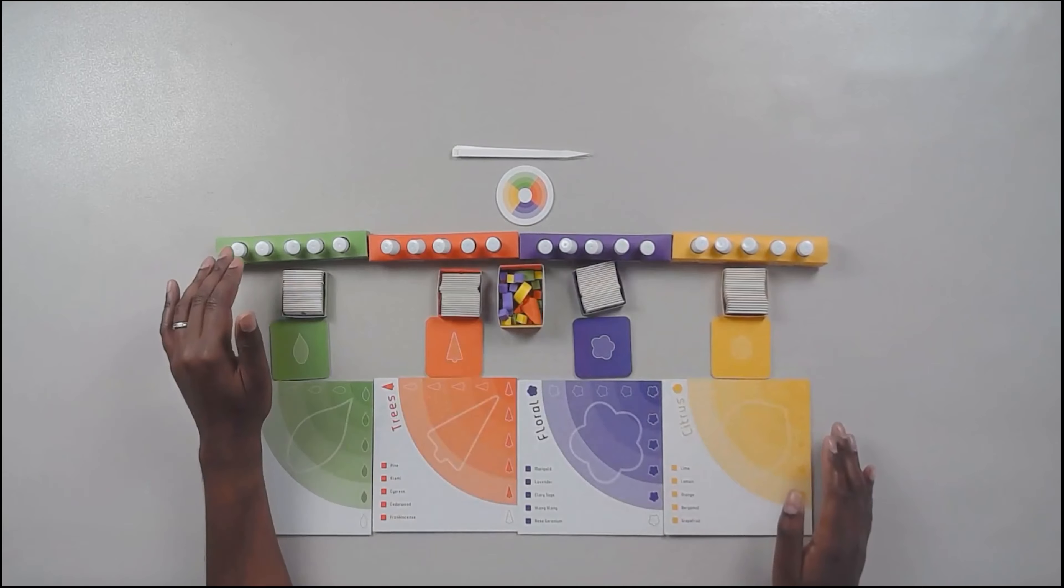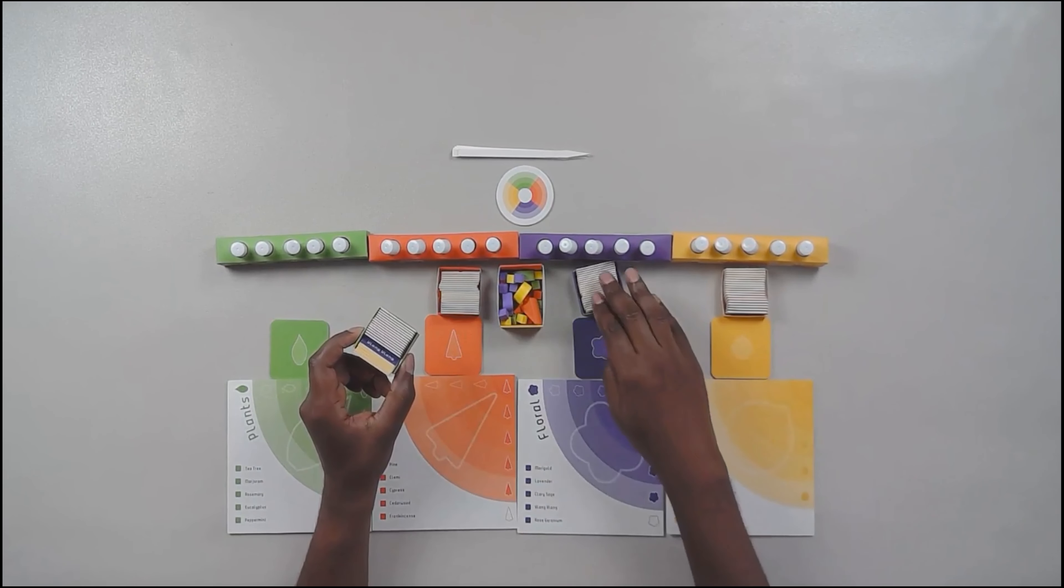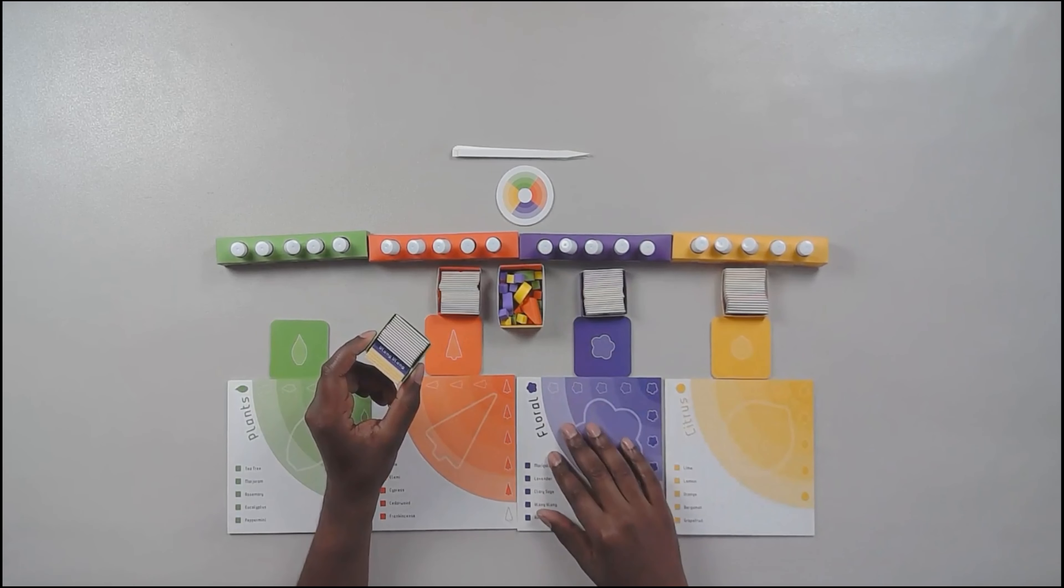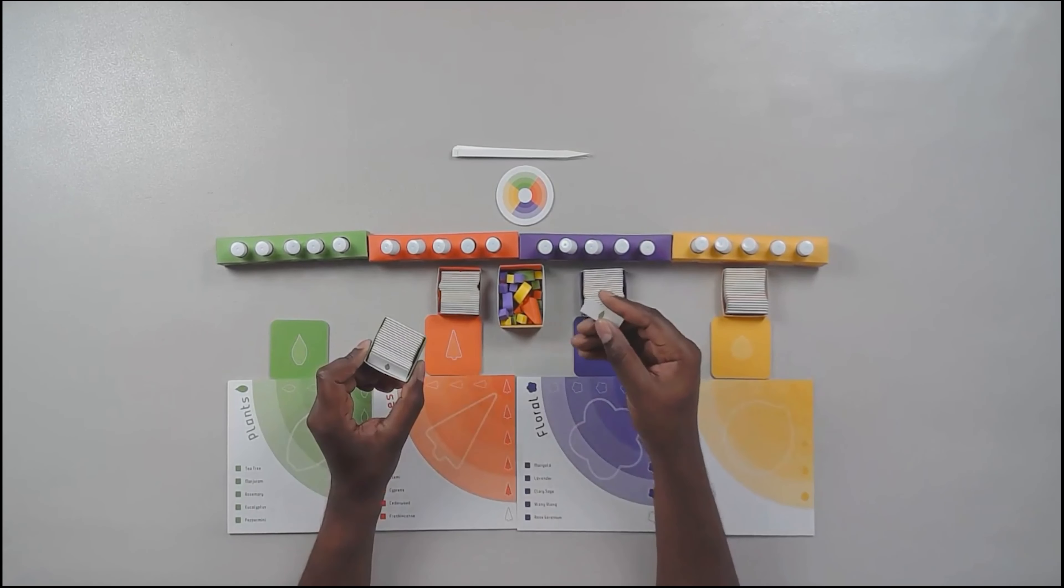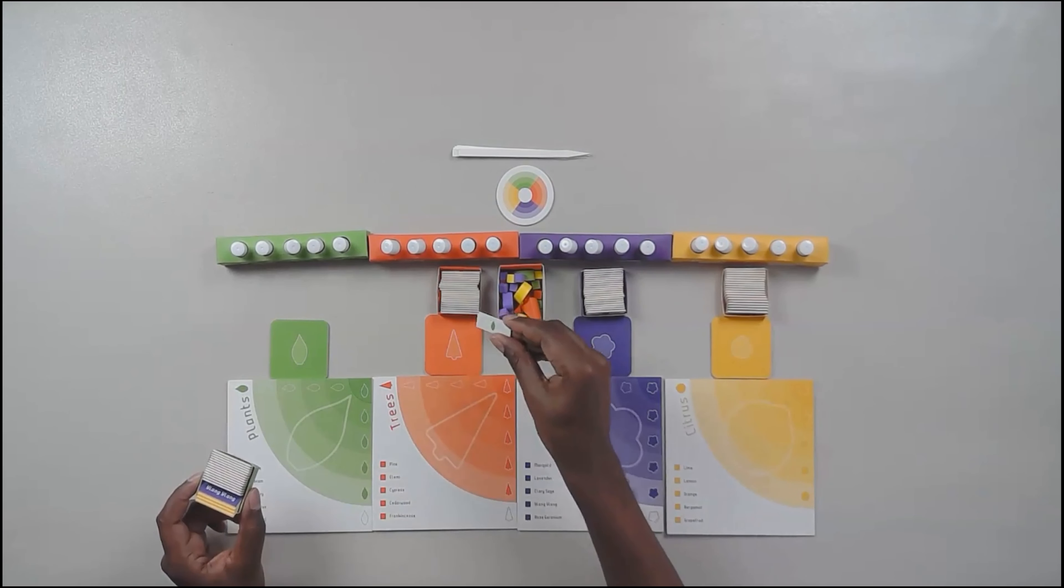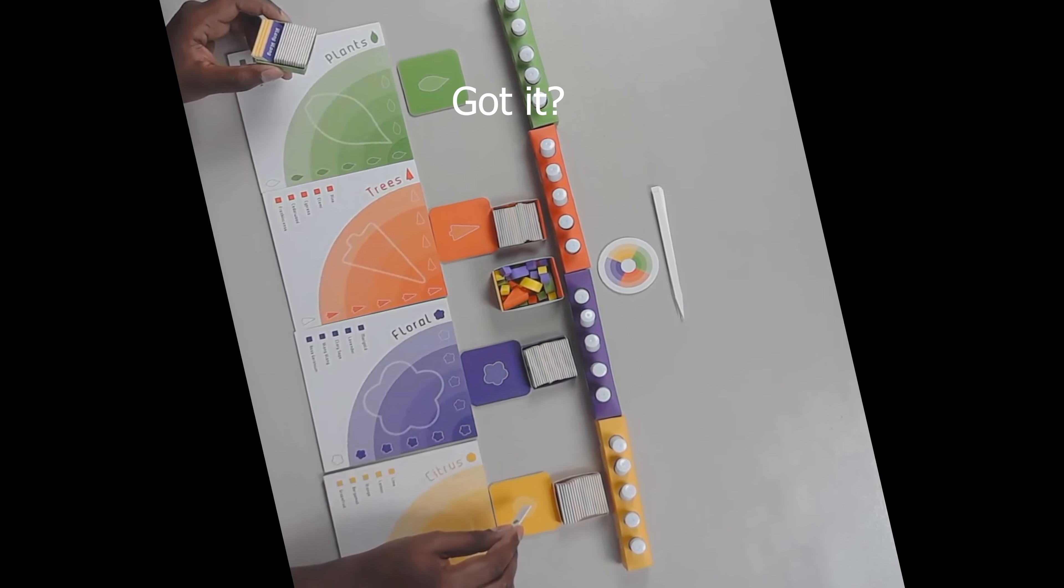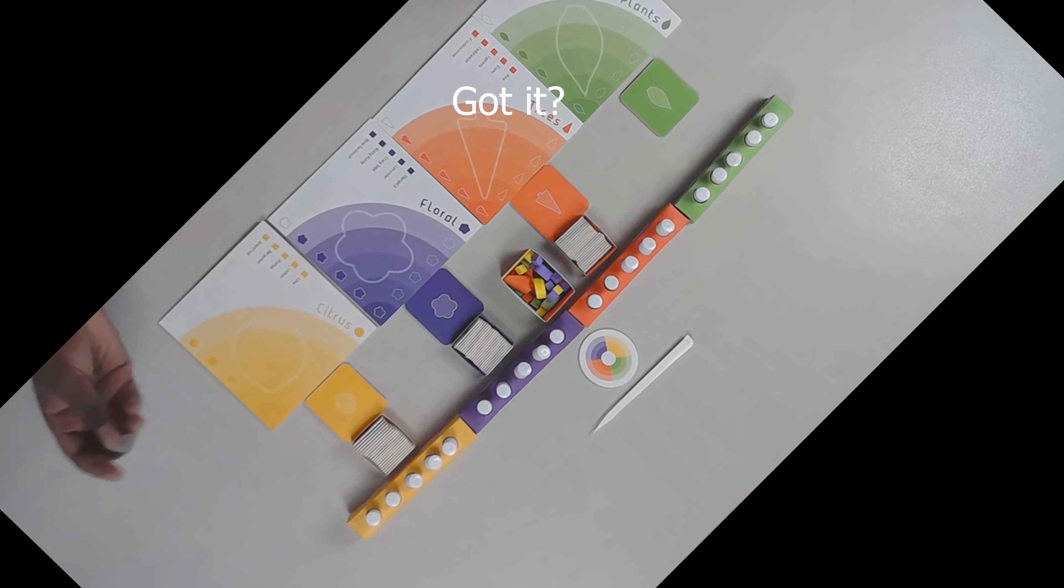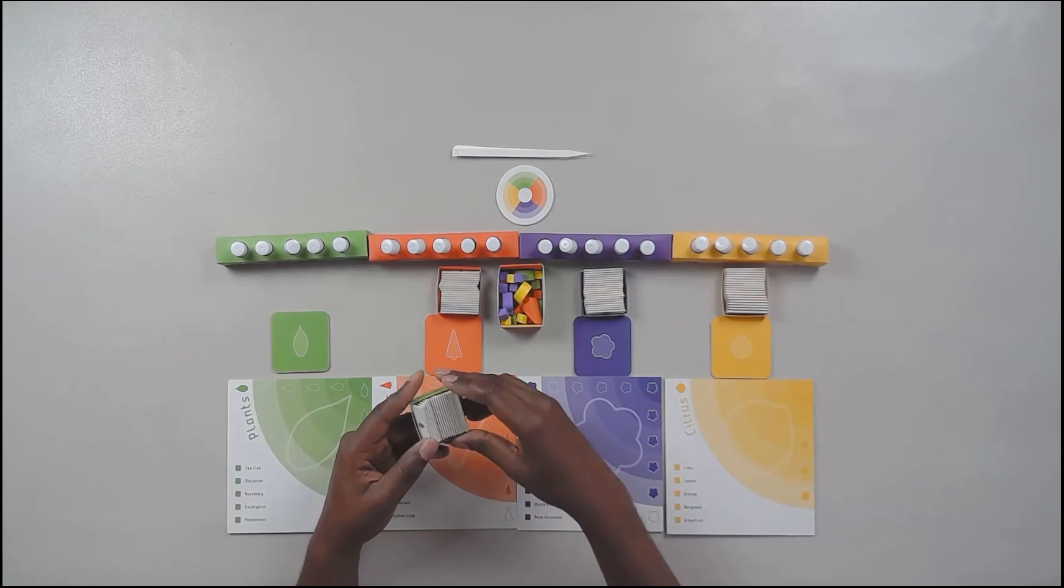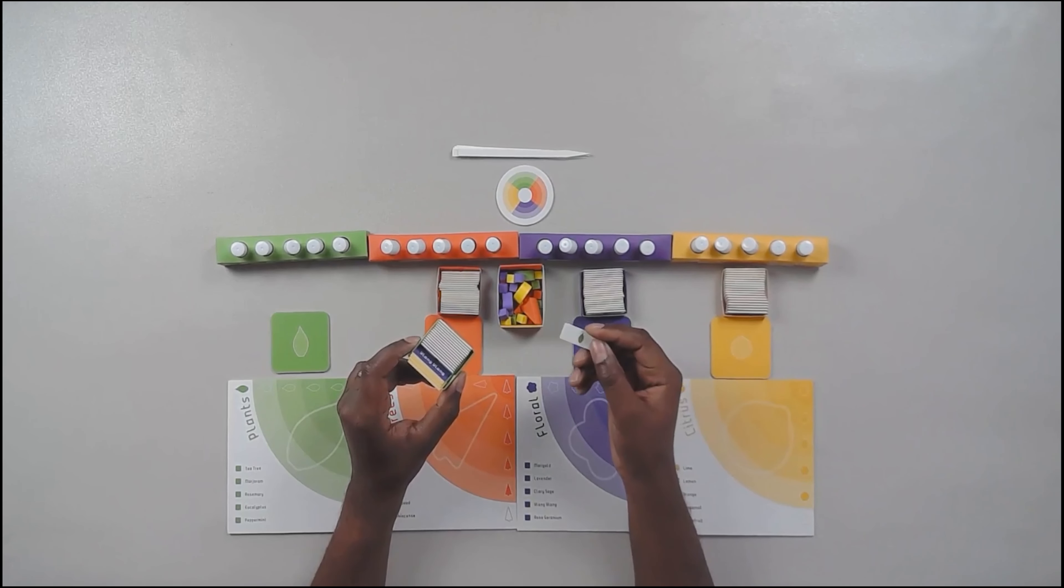There's also going to be 80 different scent tokens, which are all going to be the same. The only difference being the back of the tokens. These are the scent tokens for plants, but they contain the exact same scents listed on each one of these tokens and in everybody else's different set of scent tokens. Like I said, the only difference is the back, so you know which one is for which player.